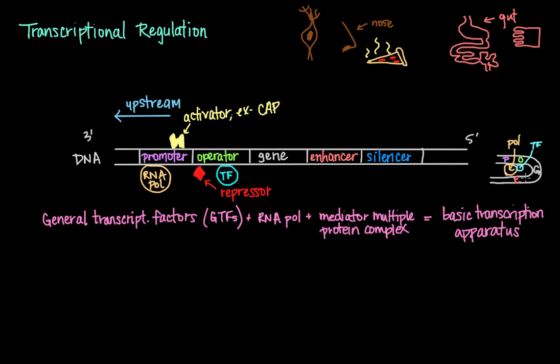This mechanism is very similar to that of the enhancer sequences that I just talked about. Similarly, silencers can be located several bases upstream or downstream from the actual promoter of the gene. When a repressor protein binds to the silencer region of the DNA, RNA polymerase is prevented from binding to the promoter region.